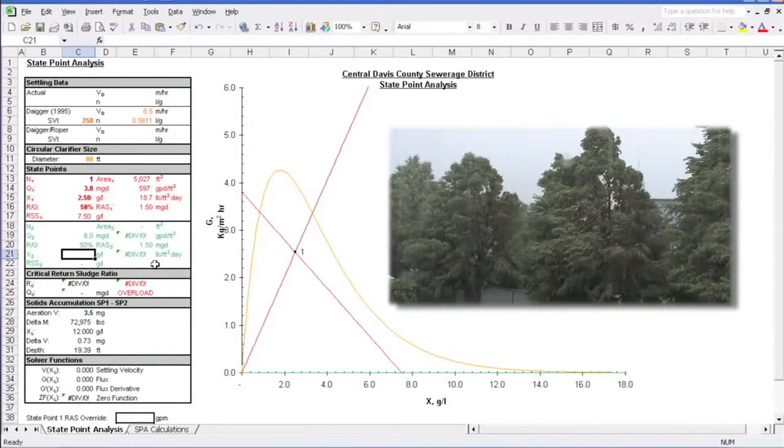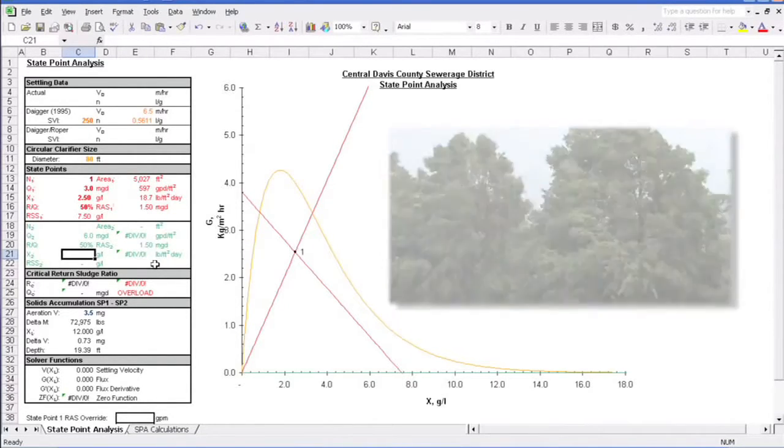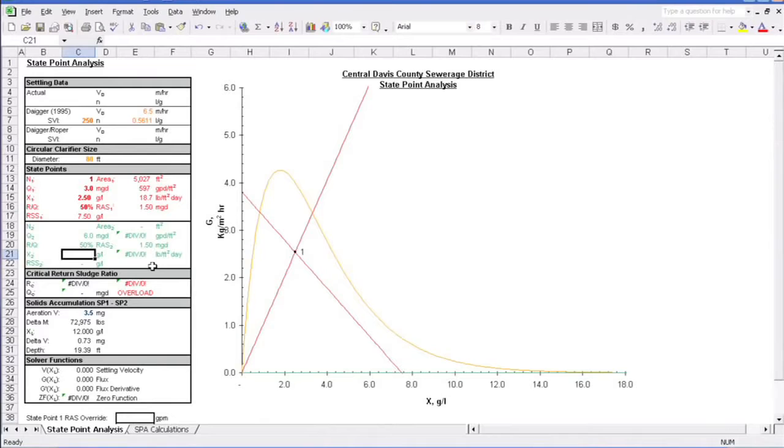So it's a rainstorm. Hits your system and the flows begin to rise. Before you know it, your influent flow has risen to 4MGD and your RAS pumps don't automatically adjust with the flow. For this, we need to override the RAS rate.